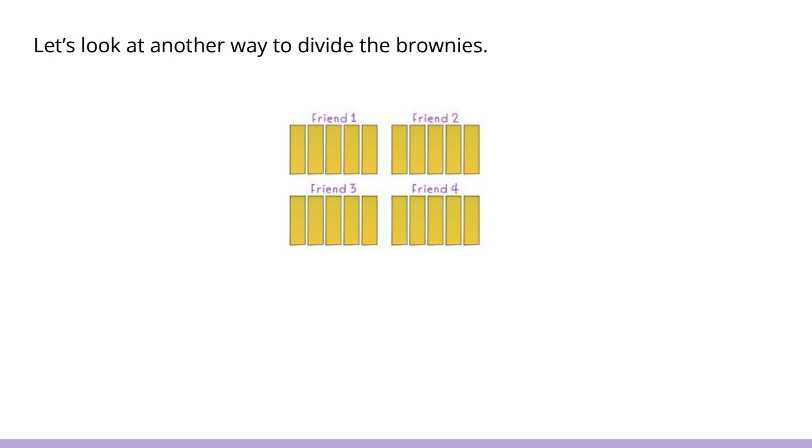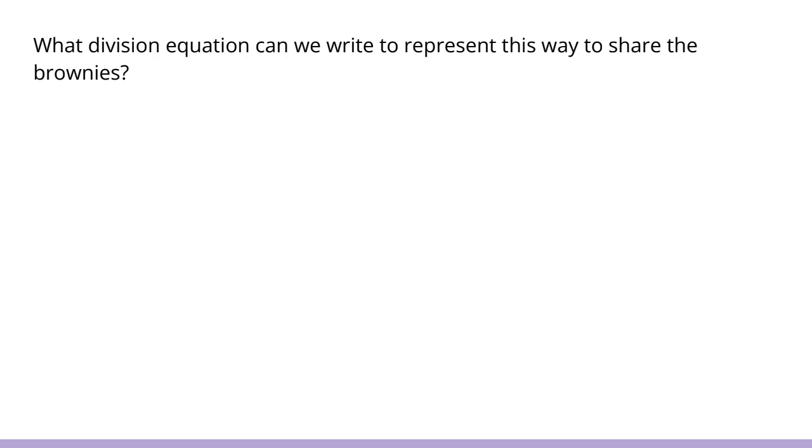Let's look at another way to divide the brownies. This person gave each friend one fourth of every brownie. We knew there were five brownies. So each person got five pieces and they were each a fourth of a brownie. Let's think about the division equation we can write to represent this way to share the brownies. This would be five divided by four. Five brownies divided by four people. And that gives us five fourths.